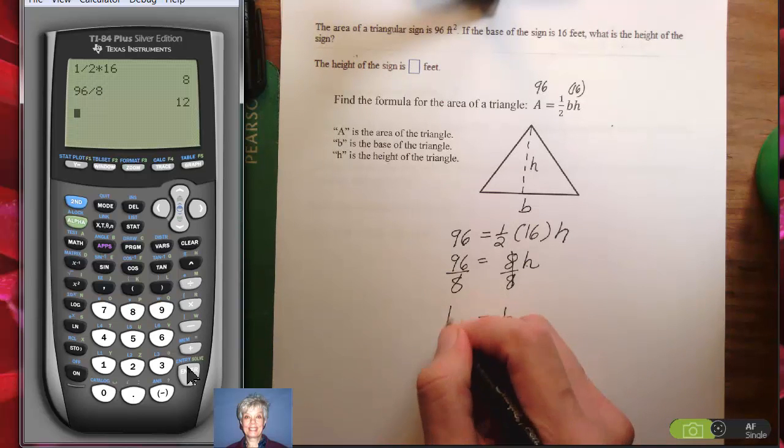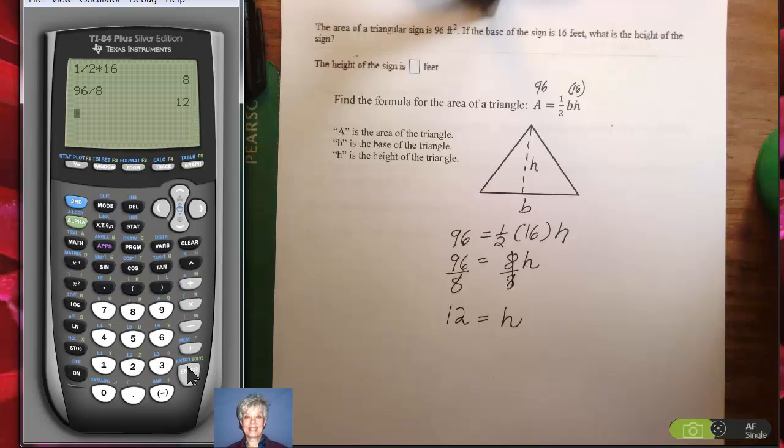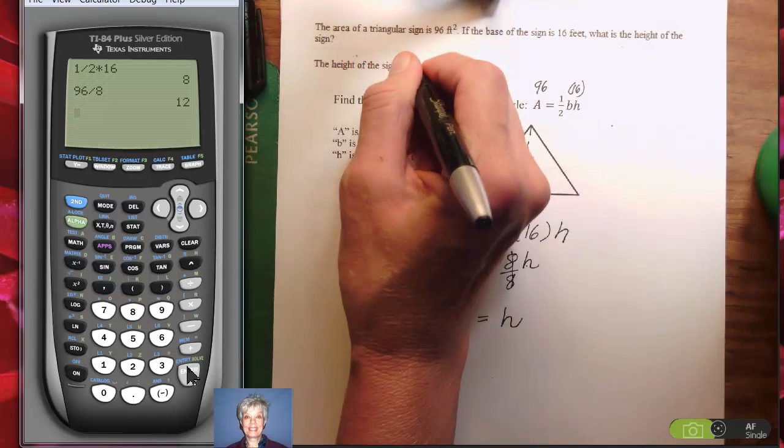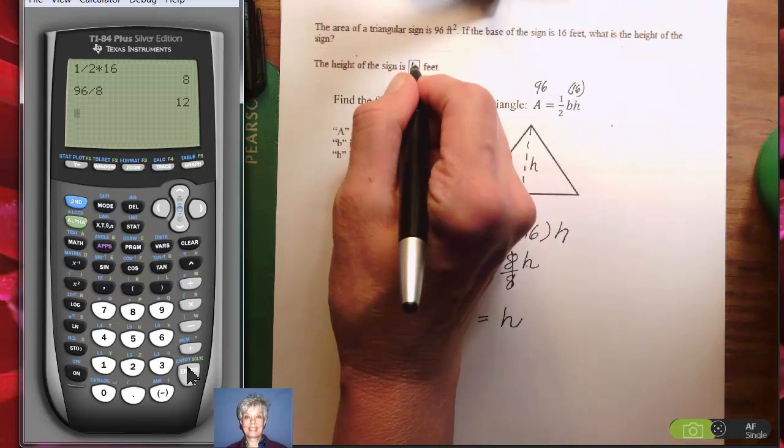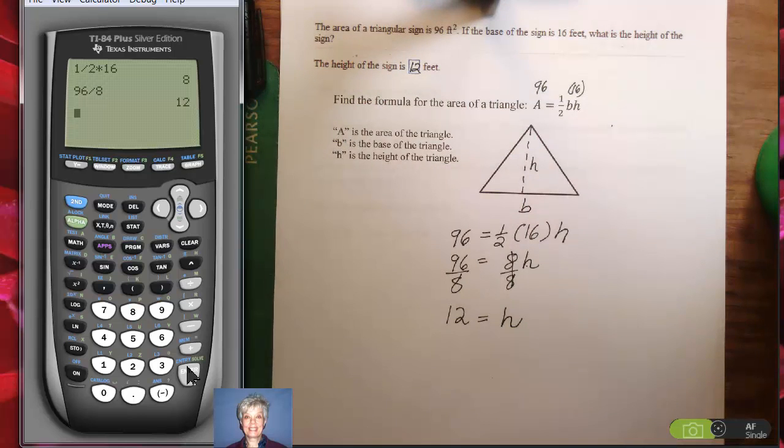So the height of the sign is 12 feet. If I were doing this in MyMathLab, I would type 12 into the answer box and then click on check my answer, and it would tell me how brilliant I am. Alright, let's try this problem.